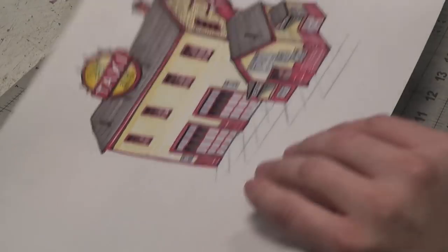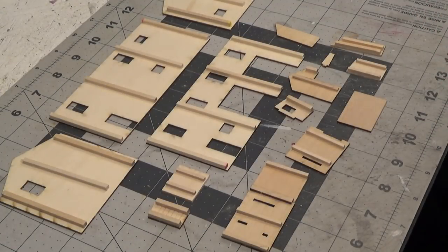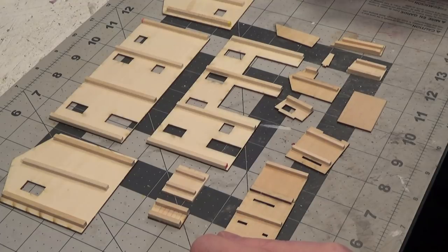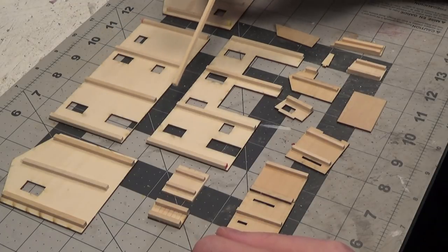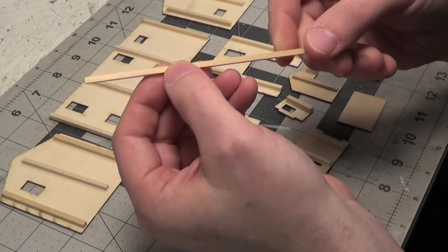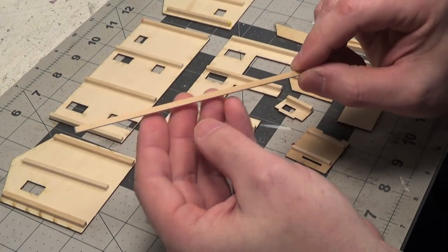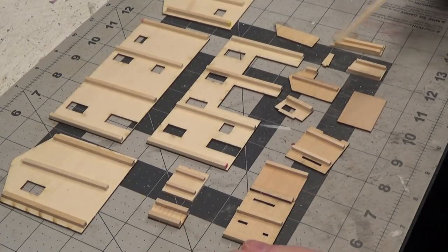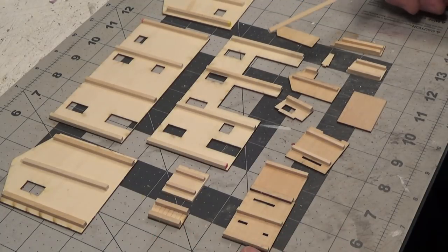So I have already gotten started with the project and here are all the walls that we are going to be using. And you can see I have added bracing to the back of them using 1/8 inch thick wood. Just simply glued it onto the backs just to prevent any warping.